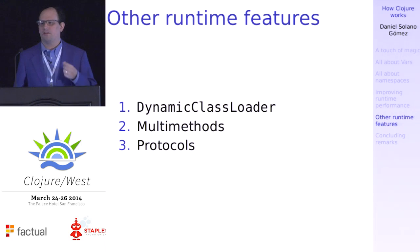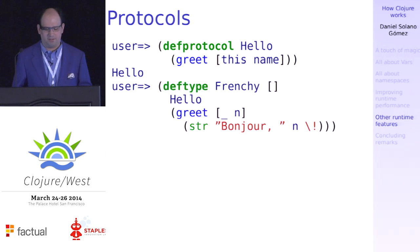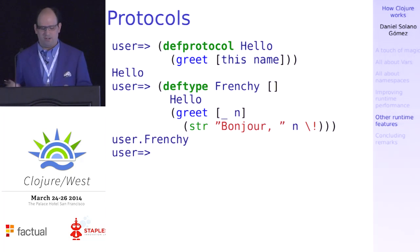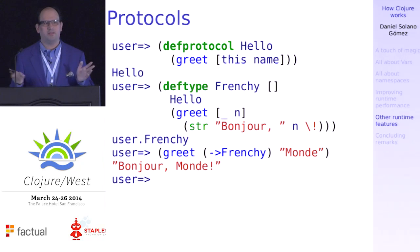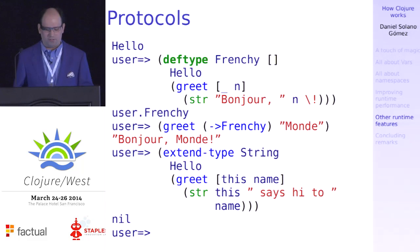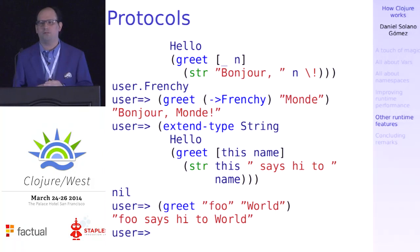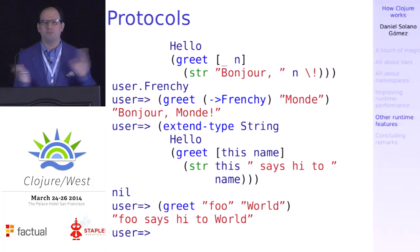Protocols are another feature, similar to multi-methods but higher performance — they dispatch based on type, which is more efficient than a dispatch function. You can create a protocol, implement it, call it. And one neat thing about protocols is you can extend types you have absolutely no control over, like `java.lang.String`. This allows you to extend your runtime and do new things with it. One difference from multi-methods is that there's no way to remove those mappings — once you've defined it, you're stuck with it.